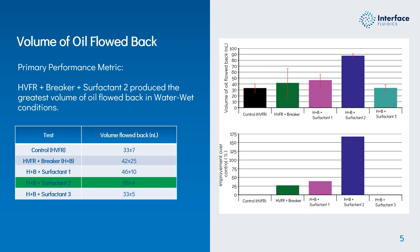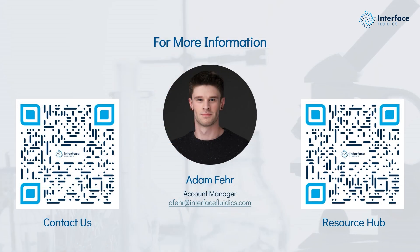That doesn't mean there's no variance — looking at the bar charts on the right-hand side, HVFR plus breaker actually has quite a large variance of performance, whereas surfactant two, which had the highest volume of oil flowed back, has a really tight margin of error and performs really well in both the oil-wet and water-wet scenarios.